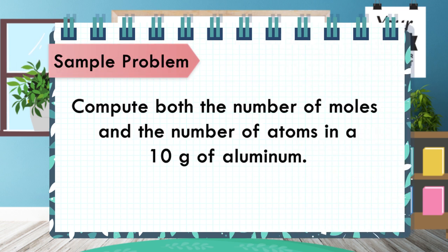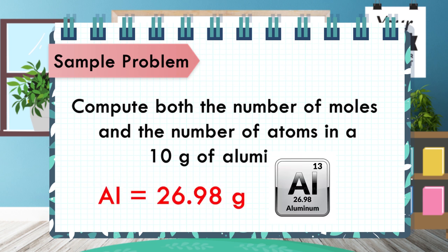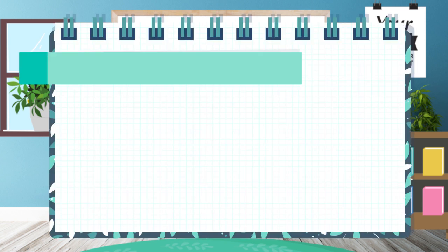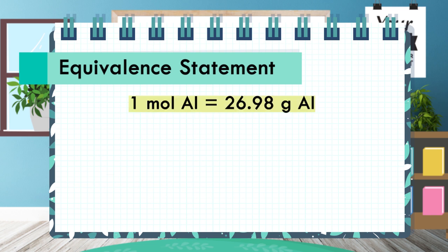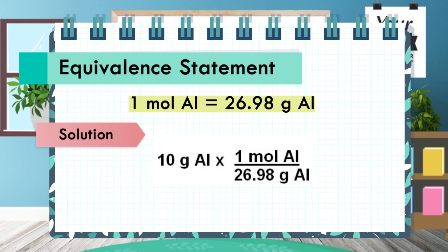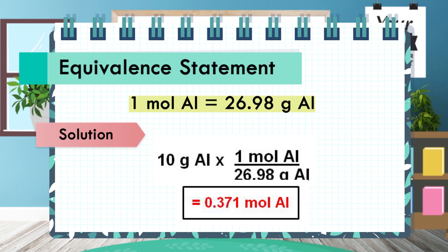Now, let's look at the step-by-step procedure on how to calculate moles and number of atoms. For example, compute both the number of moles and the number of atoms in 10 grams of aluminum. You can get the atomic mass of aluminum from the periodic table of elements. We calculate the number of moles of aluminum atoms in 10 grams using the equivalent statement: 1 mole of aluminum equals 26.98 grams of aluminum. The solution: 10 grams of aluminum times 1 mole divided by 26.98 grams equals 0.371 mole of aluminum.